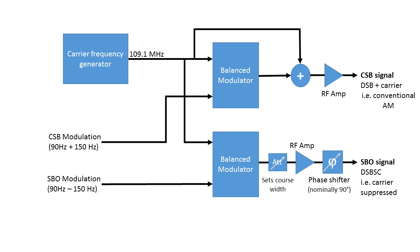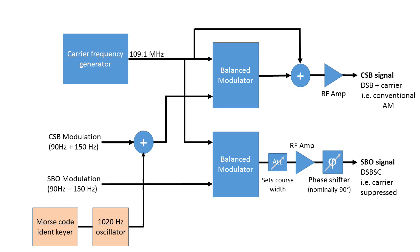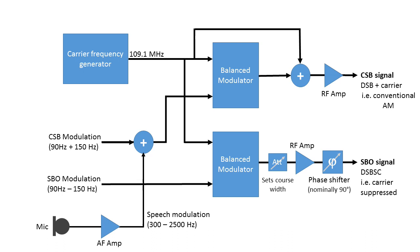Another signal is added to the CSB transmission: a 1020 Hz tone generator keyed with Morse code signals to form the IDENT signal for the ILS, so that the pilot can confirm he is heading for the correct runway. There is also a provision in the ILS spec for speech to be added to the transmission — this is rare in practice, though it could be used to give information to a pilot whose COM equipment had failed or to give weather information. Here's a brief recording of an ILS transmission as received on a simple AM receiver.